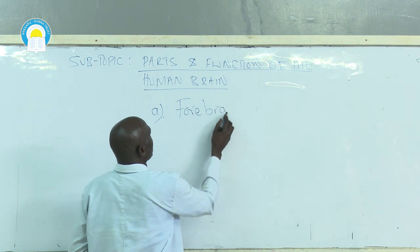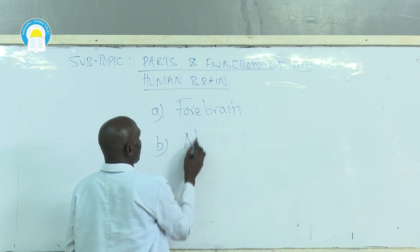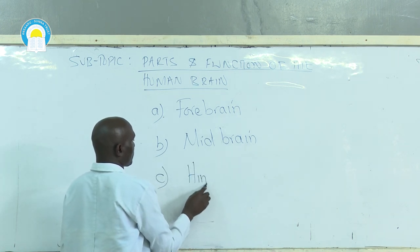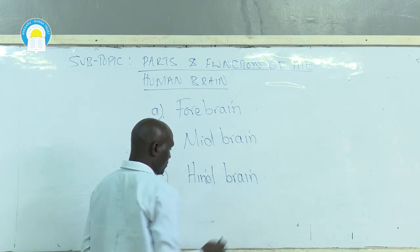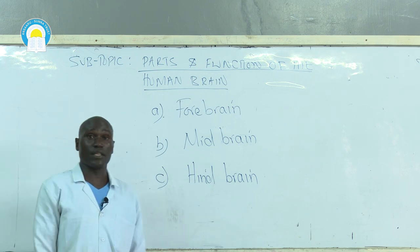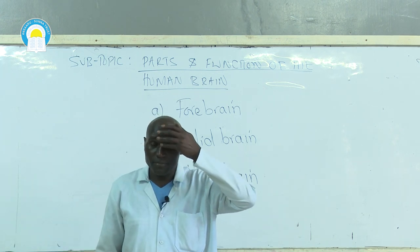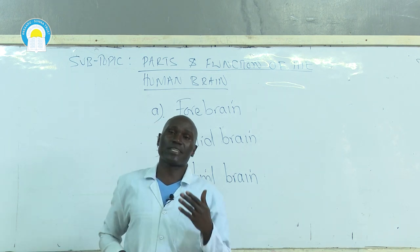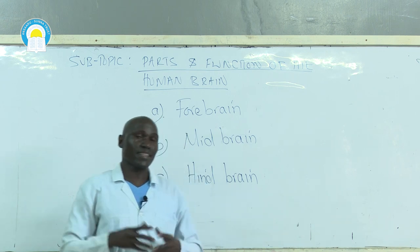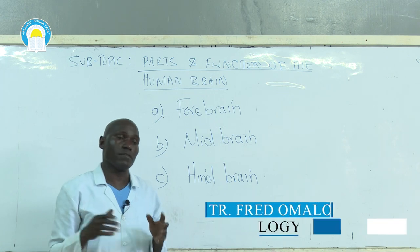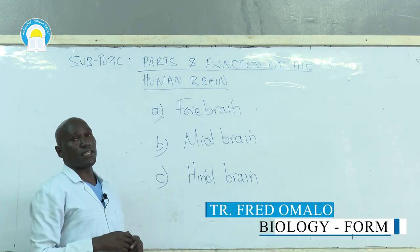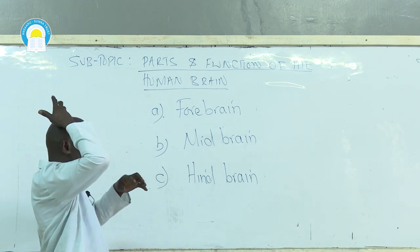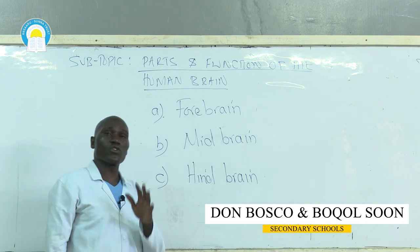The brain is divided into three main parts: forebrain, found on the front part of the brain; midbrain, the middle part; and hindbrain, the back part. The cranium or skull covers and protects the brain from physical or mechanical injury, as the brain is a very soft organ that can be easily damaged.